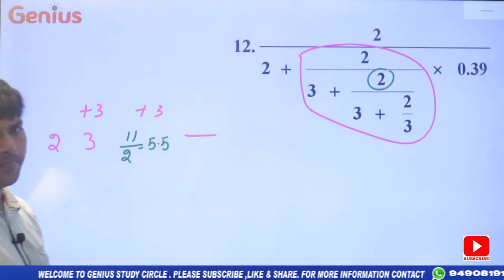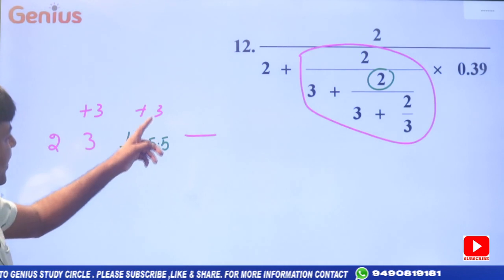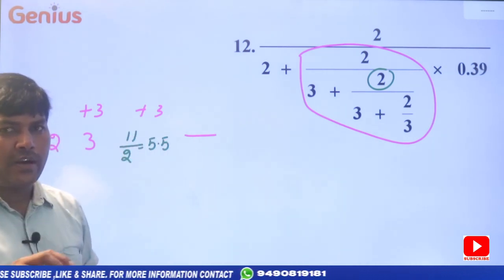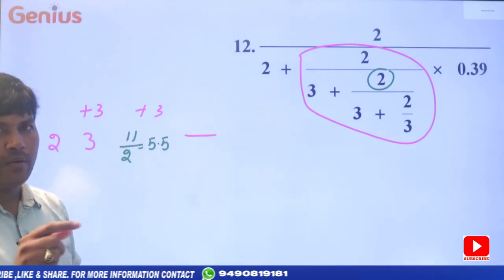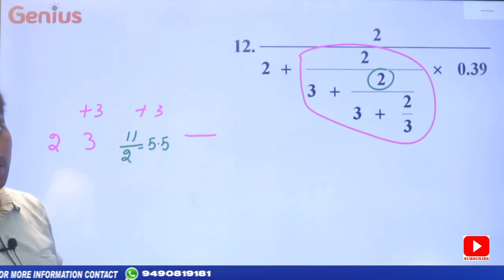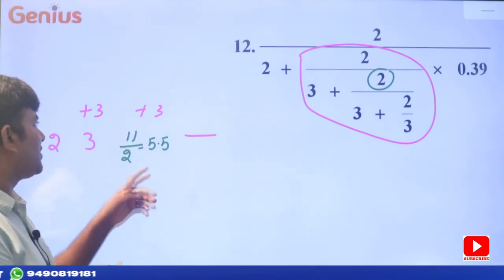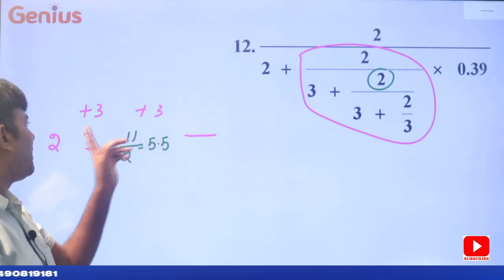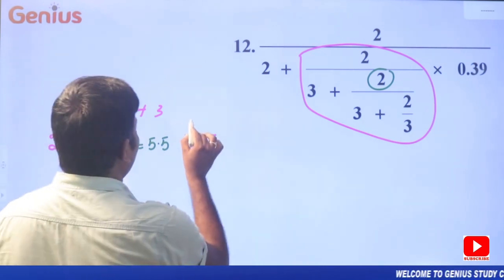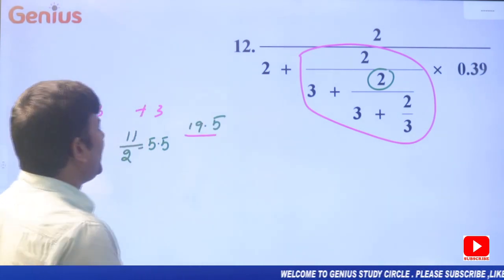11 divided by 2: the result will be 5.5. Then 5.5 into 3: 5 into 3 is 15, and 0.5 into 3 is 1.5, so 15 plus 1.5 equals 16.5, plus 3 is equal to 19.5.